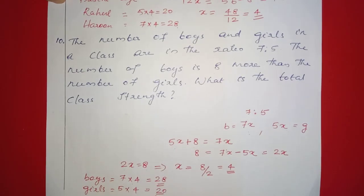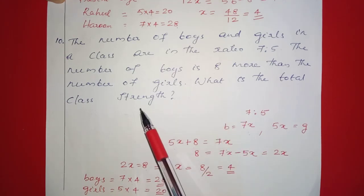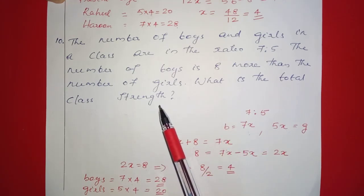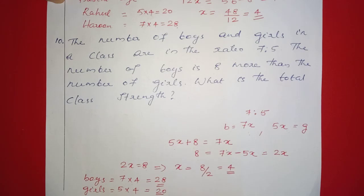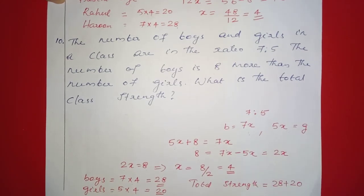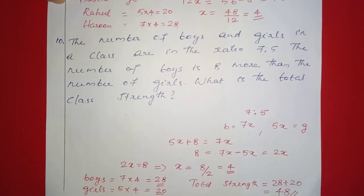Girls are 20 and boys are 28. The total class strength is 28 plus 20, which equals 48.